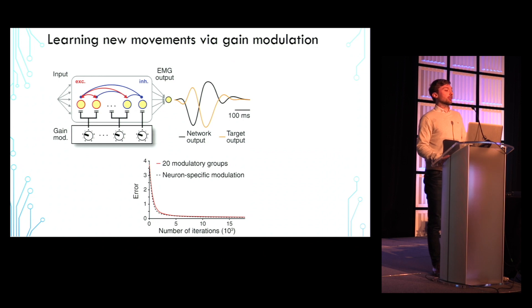Furthermore, we find that network size hardly affects learning performance for a fixed number of groups. Now, for the remainder of the talk, I will use a 400 neuron network and 40 modulatory groups.